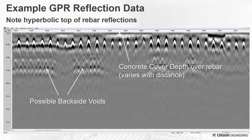Here's a GPR scan from a pipeline or tunnel liner. The individual parabolas are the rebar; the depth from the zero point to the tops of the parabolas gives you the cover depth — shallow in some places, deeper in others. What's interesting are additional reflections deeper, which we call bright spot reflectors. Those are typically indicative of voiding behind the liner or pipe. Even though there is rebar, we can still detect voids behind the liner, as long as the rebar isn't too dense.